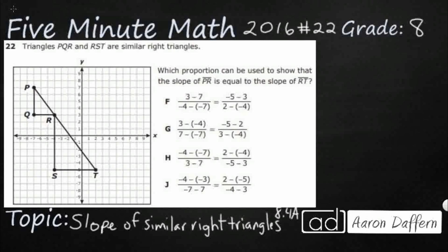So we've got two right triangles, and take a look — they are sharing the same hypotenuse. It's just a straight line, so it makes sense that the slope is going to be equal for both of those hypotenuses, but we can actually use proportions to figure that out.